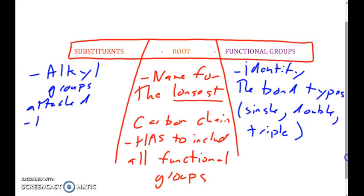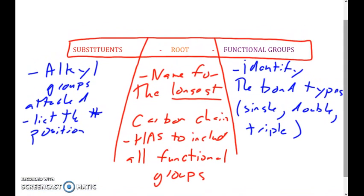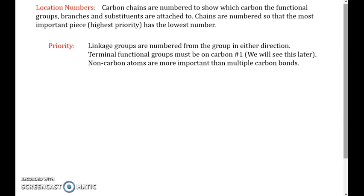What's important with these is that we list the number position. What if you have multiple chains with multiple names? What's important when you're doing this is that it goes in alphabetical order. Carbon chains are numbered to show which carbon the functional groups, branches, and substituents are attached to. Chains are numbered so that the most important piece has the lowest number. Linkage groups can be numbered in any direction — what you're ultimately looking to do is ensure the side groups that are attached have the lowest numbers.